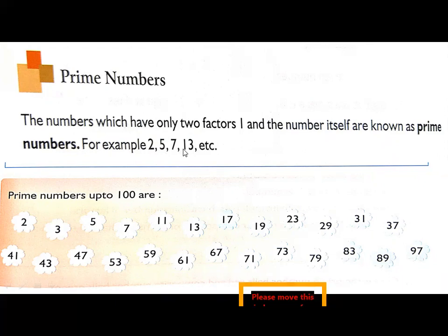These numbers are having only two factors such as 1 and itself. So we call these numbers as prime numbers.